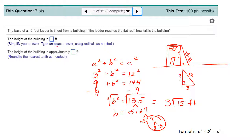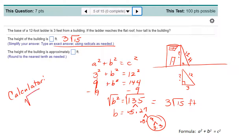Taking the square root of both sides: the square root of 135 simplifies as 135 equals 5 times 27 equals 5 times 3 times 9. Since 9 is a perfect square, the square root of 9 is 3, leaving an extra 3 and 5, giving 3 square root of 15. Using a scientific calculator, the square root of 135 rounded to one decimal place is 11.6 feet.